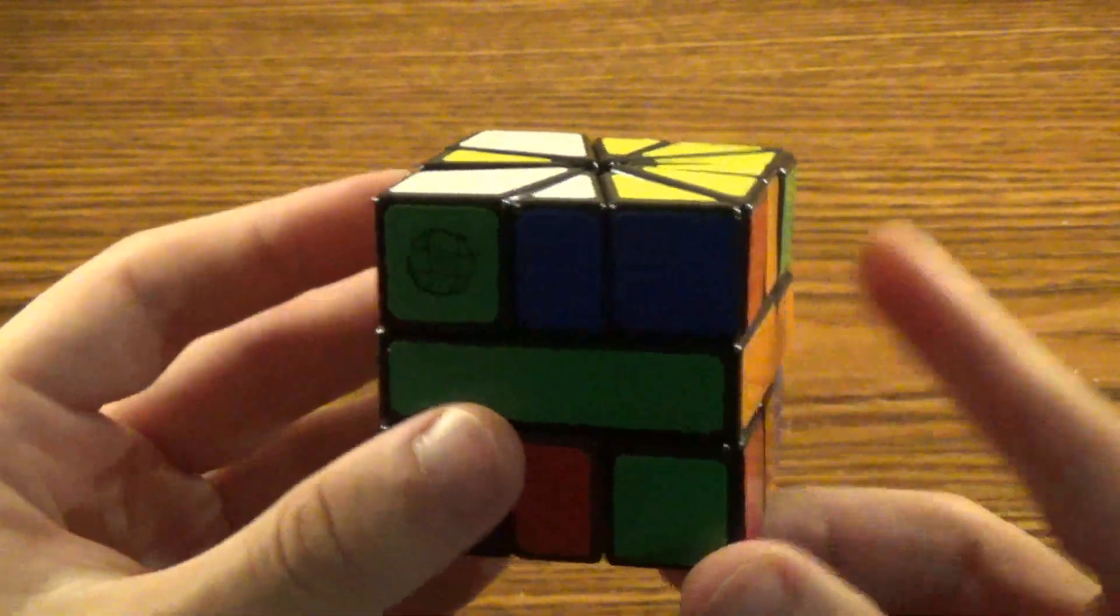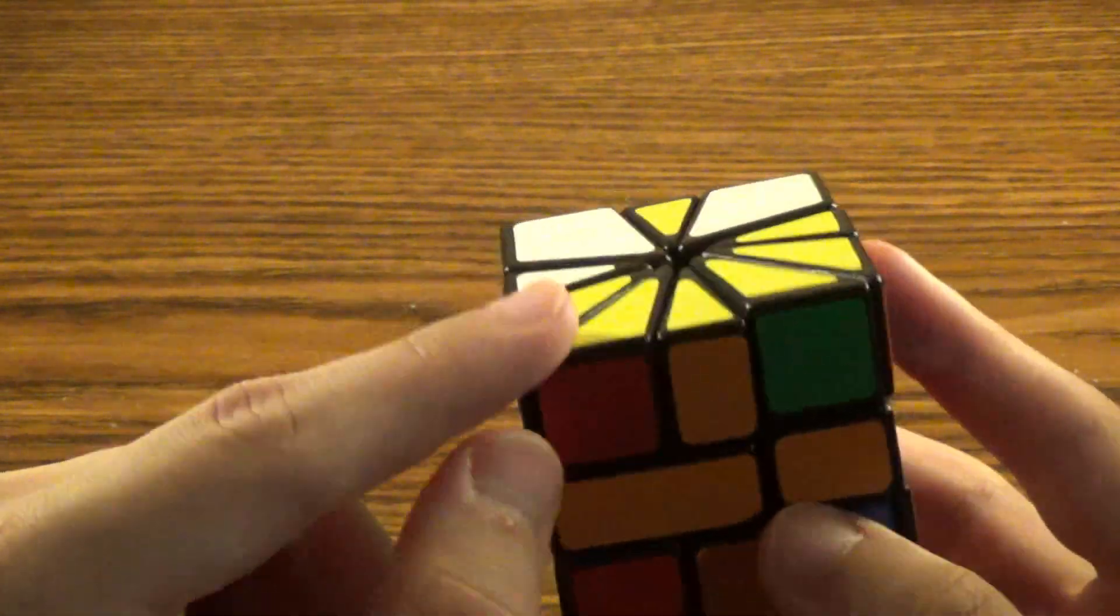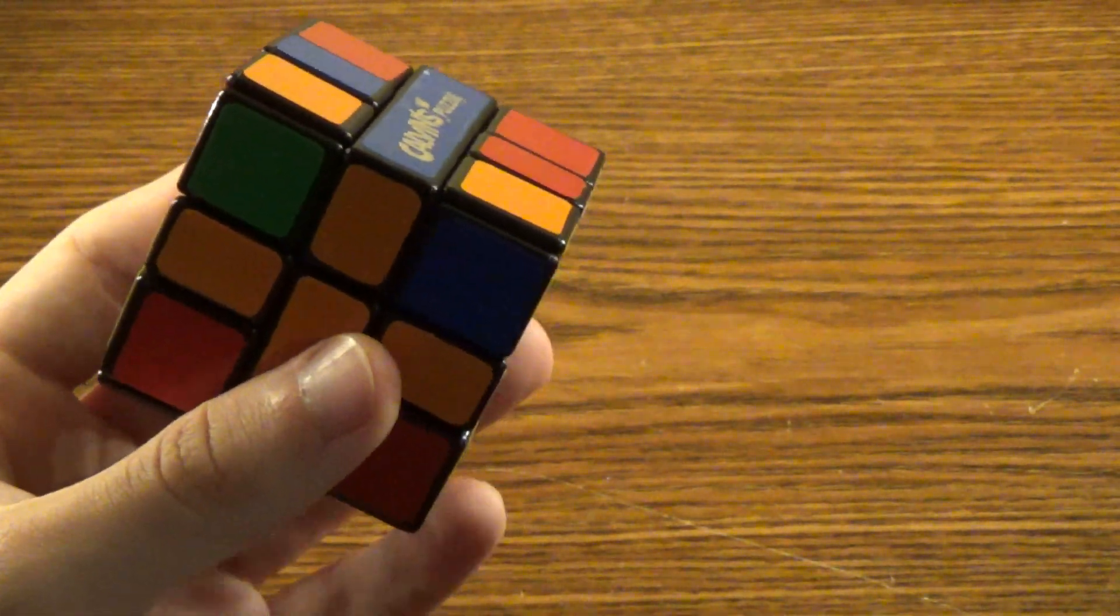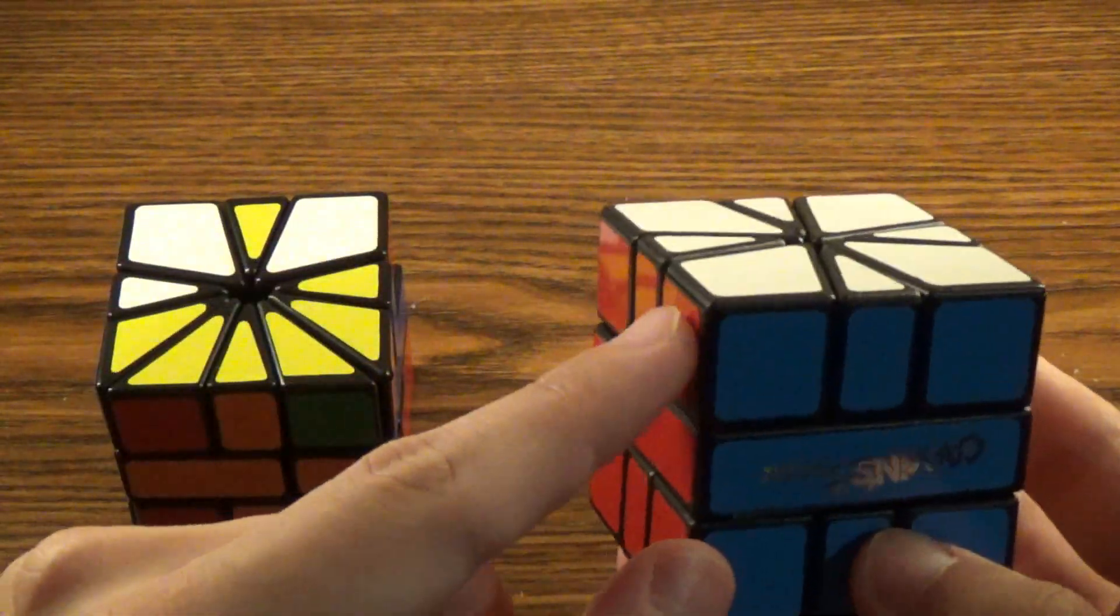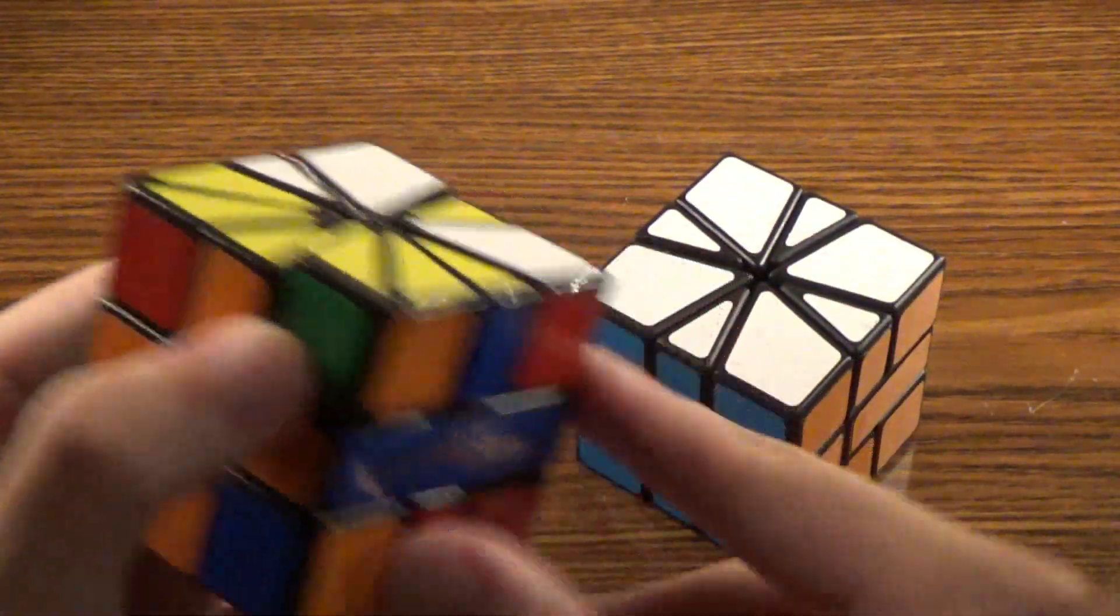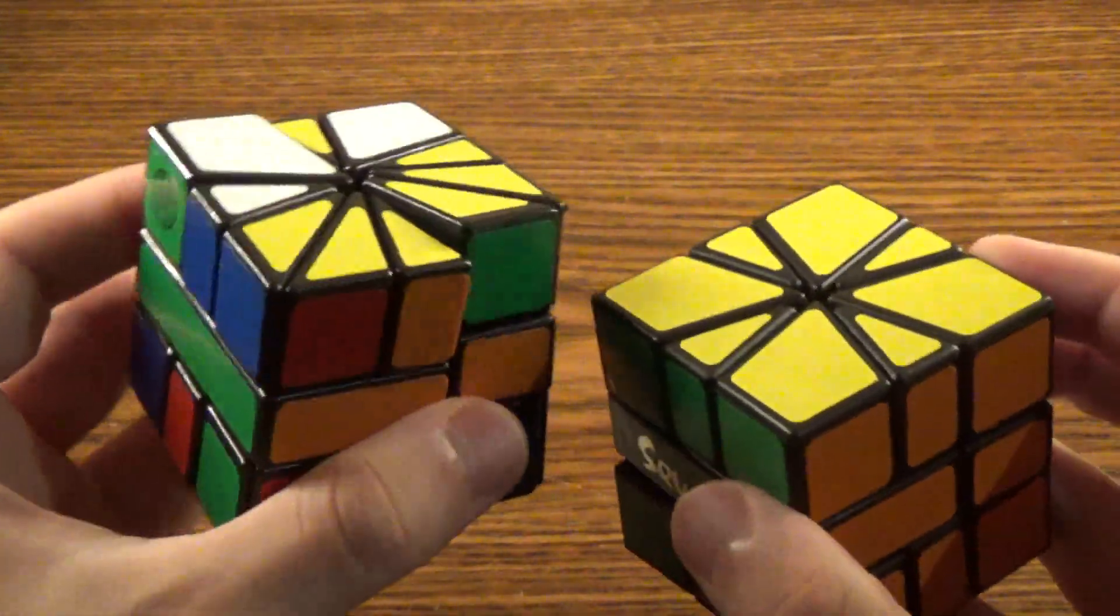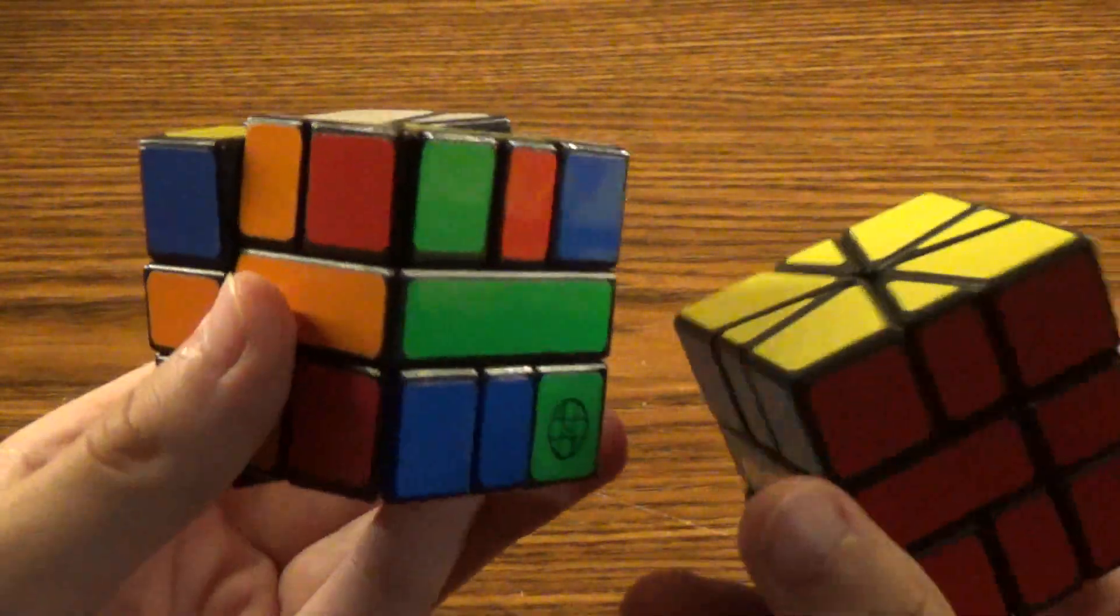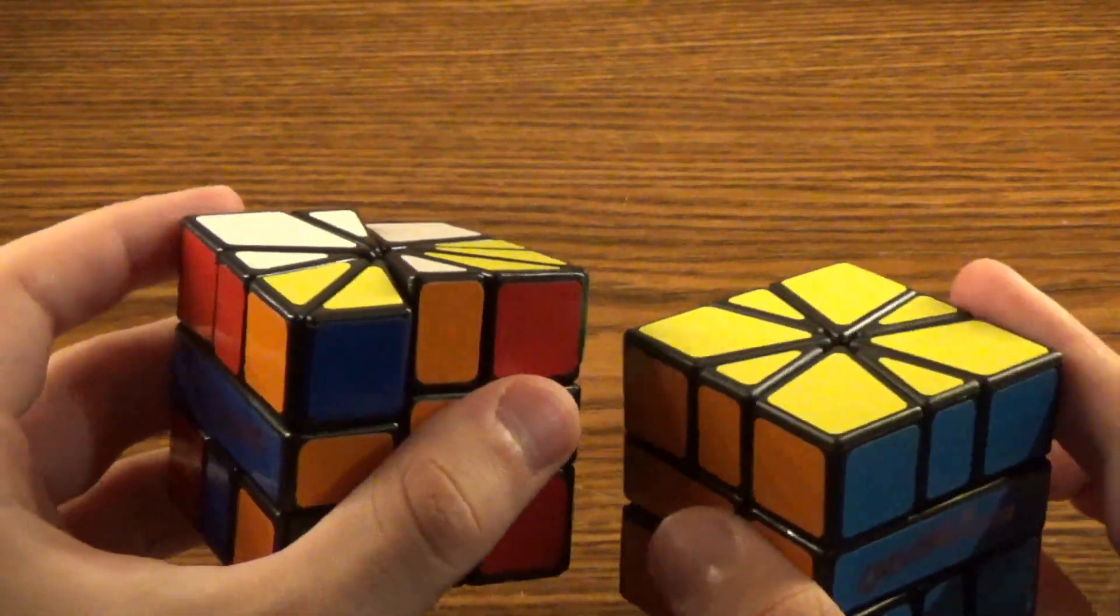So now what I'm actually going to do is try and see if all these corners are paired up correctly. Because if we want to solve this as a Square-1, the corners need to be paired up so that they essentially form these colors. So let's check. This corner is good. This corner is good. This corner is good. And the last one is also good.